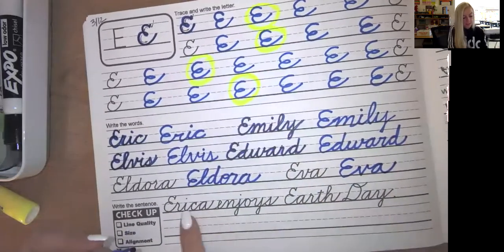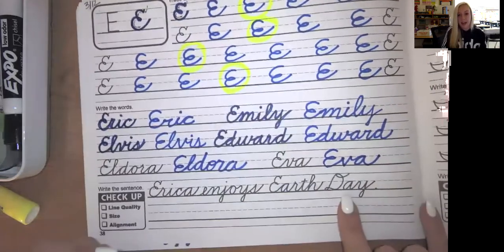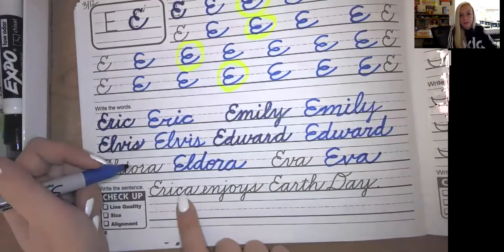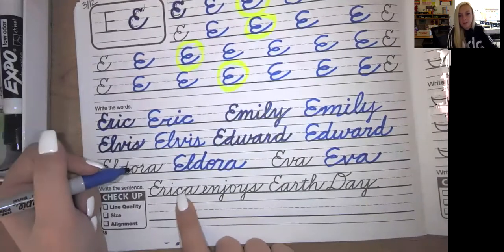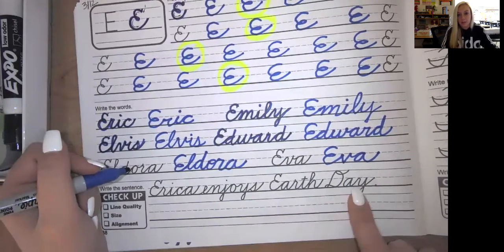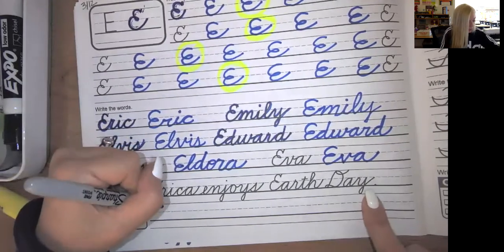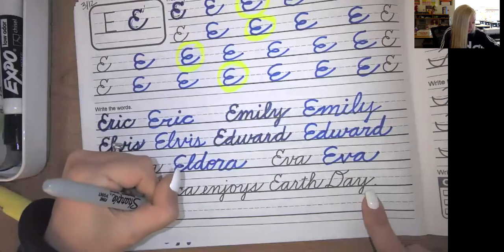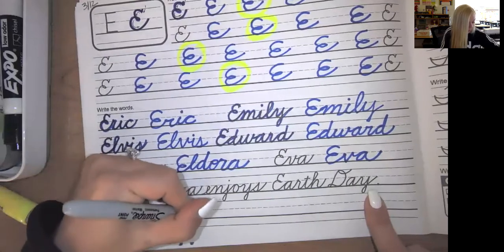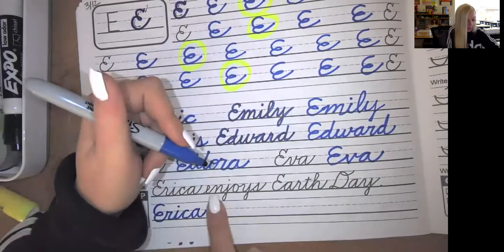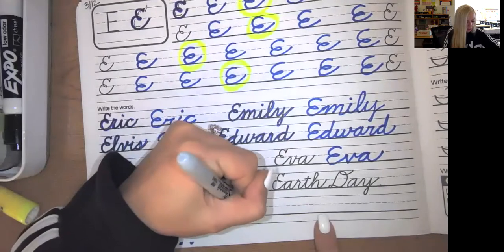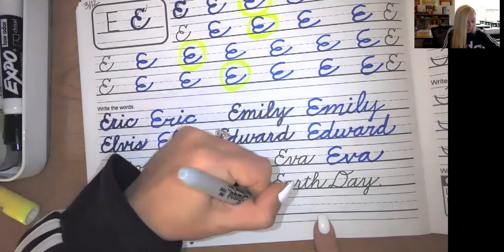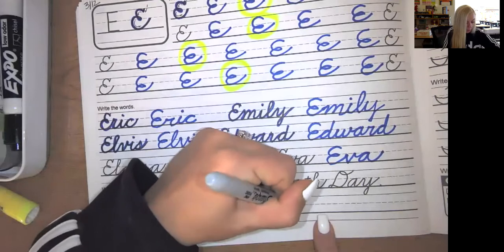Now we have our sentence. Erica enjoys Earth Day. We have Erica is a proper noun, the name of somebody, so we need to capitalize it. And Earth Day is a holiday, so we need to capitalize both of those words. Again, if you feel more comfortable tracing the sentence first to practice, I think that's a great idea. Making sure that you're putting a finger space in between your words.